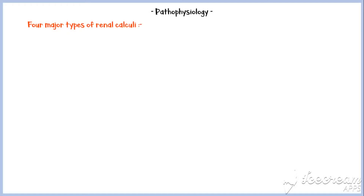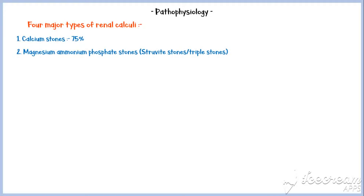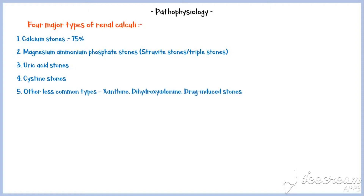Now let's discuss the pathophysiology of urinary stone disease. There are four major types of renal calculi: calcium stones, which account for about 75% of all urinary stones; magnesium ammonium phosphate stones, also known as struvite stones or triple stones; uric acid stones; and cystine stones. In addition to these, there are some less common types, including xanthine, dihydroxyadenine, and drug-induced stones.